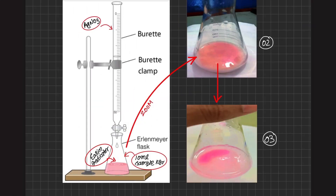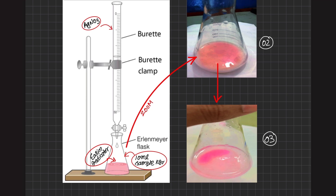After swirling the flask, we have finally reached the end point. The cloudy nature has further shifted into a more clear solution with the formation of dark pink with purple precipitates. These precipitates are formed due to the silver and eosin complex. This is the end point of this titration, and at this stage we stop further addition of silver nitrate from the burette into the flask.